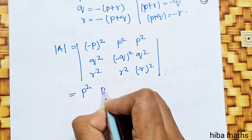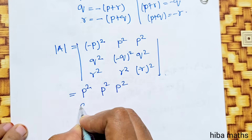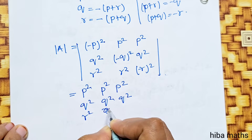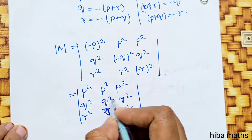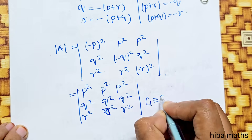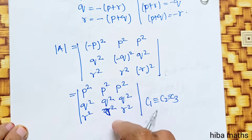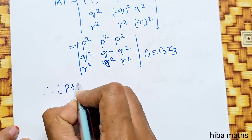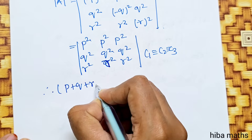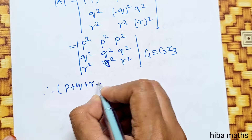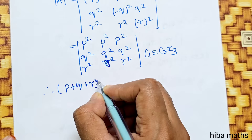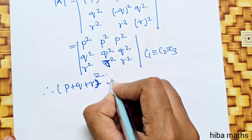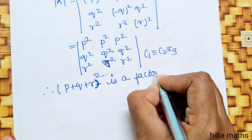P², P², P², Q², Q², Q², R², R², R² — one column is identical to another. Therefore, (P+Q+R) minus 0 whole square is also a factor, so we can write the determinant accordingly. Then 3 minus 1 is a factor.